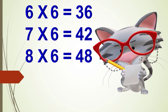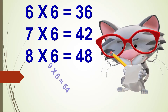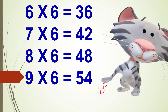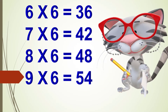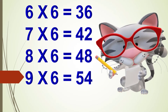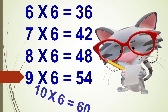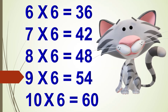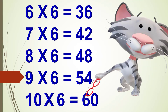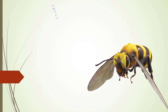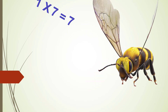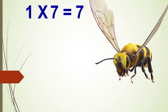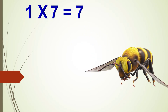Eight times six are forty-eight, nine times six are fifty-four, ten times six are sixty. One times seven is seven.